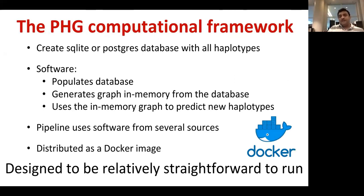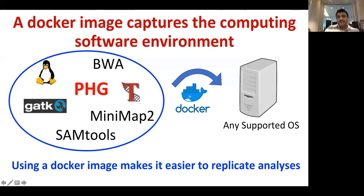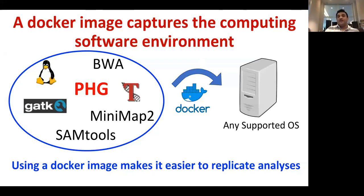We distribute PHG as a Docker system, which is relatively straightforward to run. The Docker container includes compatible software: Linux, GATK, minimap, SAMtools, and BWA. It can run on any operating system. Using the Docker image makes it easy to replicate any analysis.